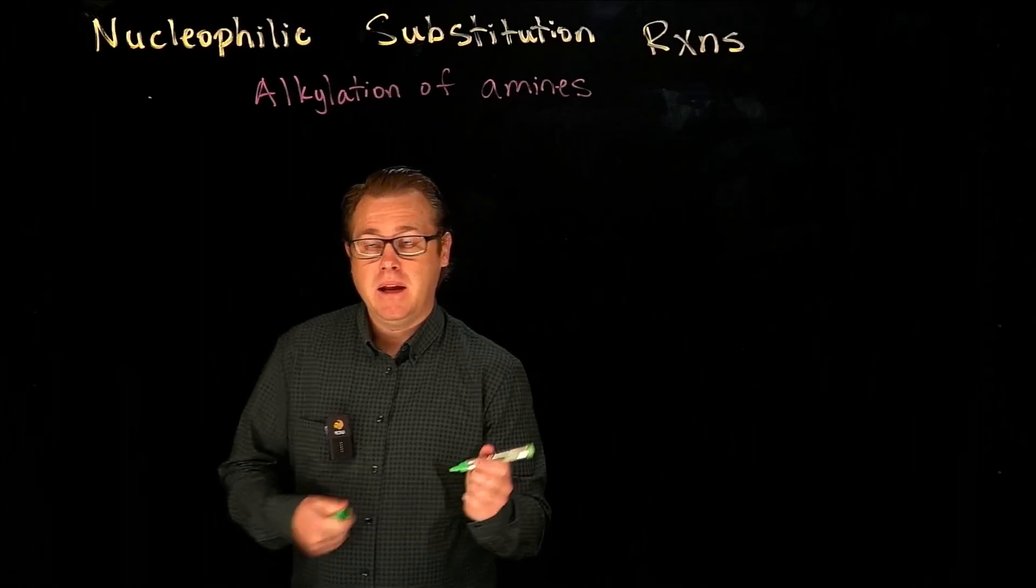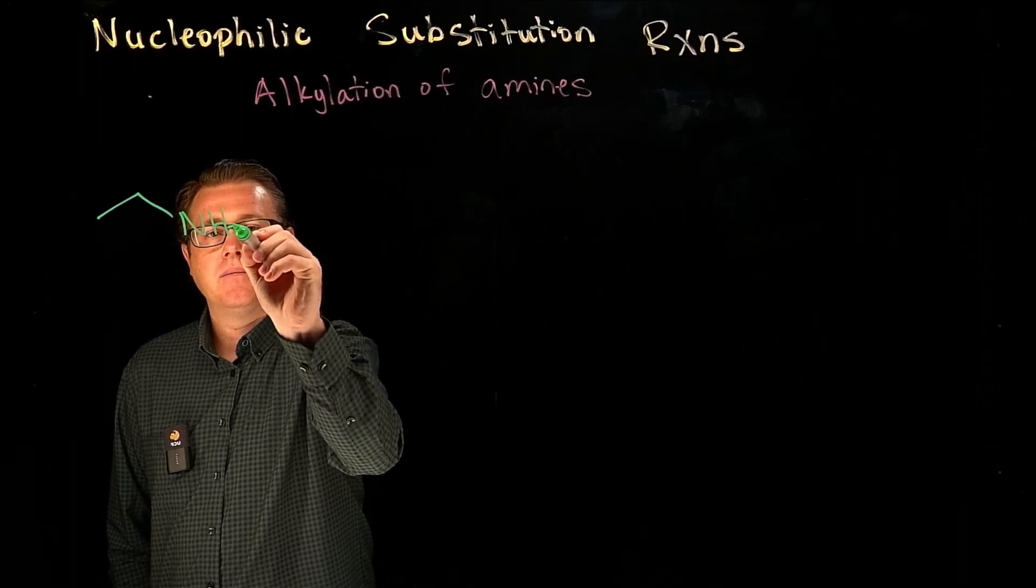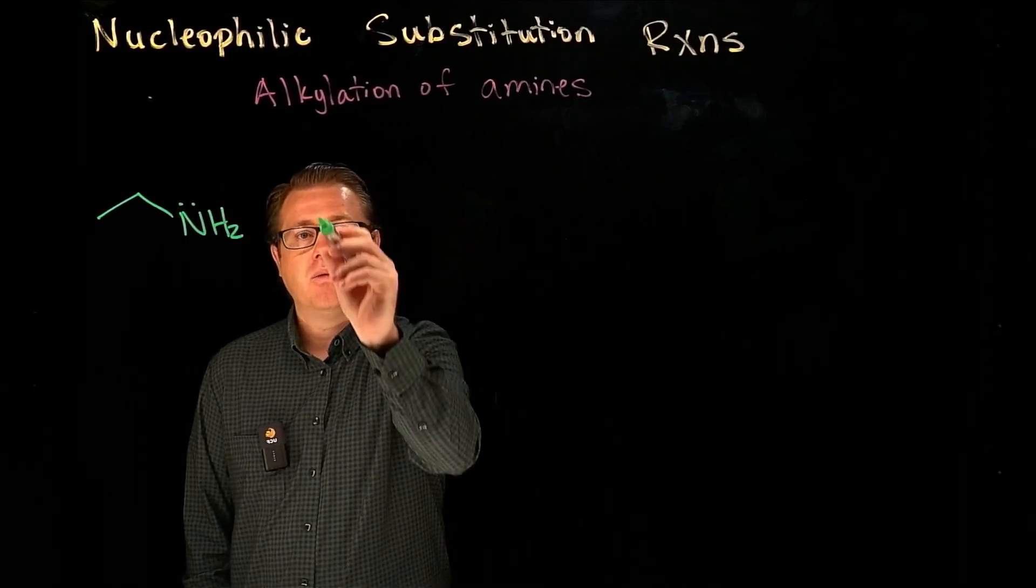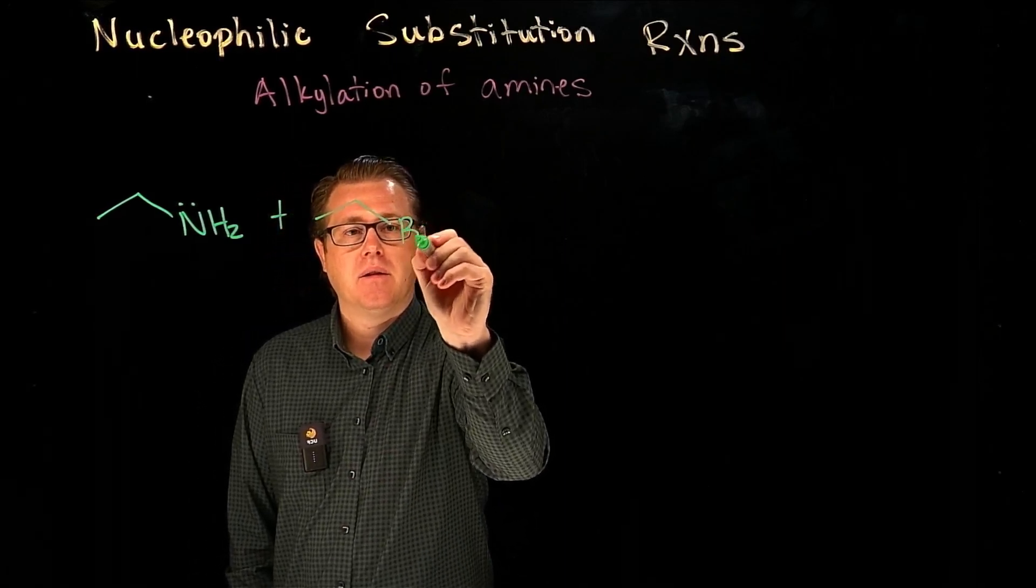If you have an amine, like let's say this guy right here, you can alkylate that amine when you treat it with, let's say, an alkyl halide, like so.